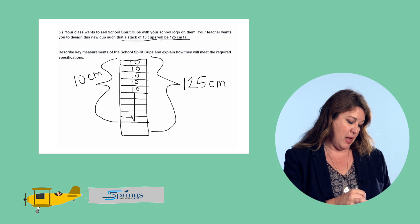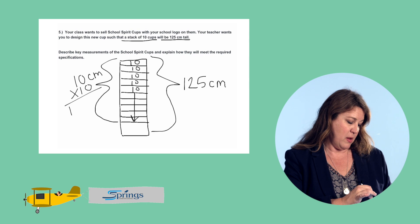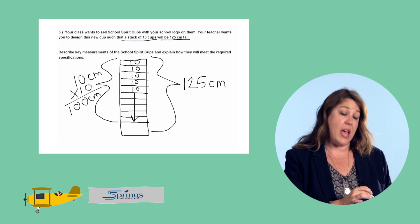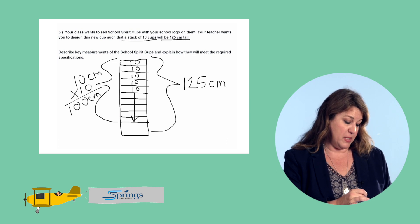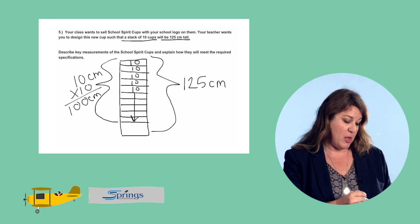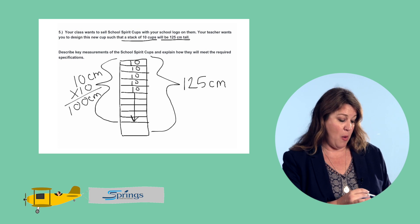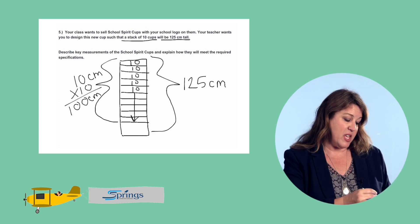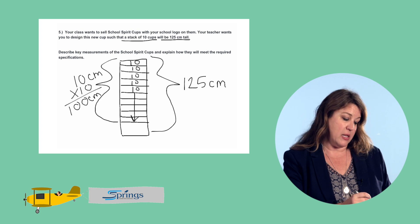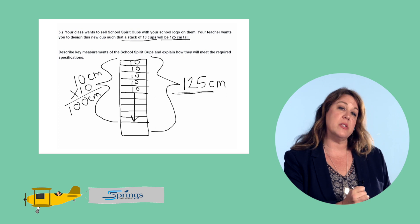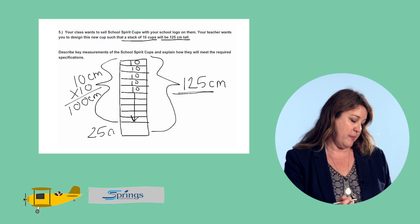So we have 10 times 10, which equals 100. The height of the lips of our cups is equal to 100 centimeters. Then we have the height of the base — that one cup on the bottom. The entire height of the stack needs to be 125, so the difference between 125 centimeters and 100 centimeters is 25.